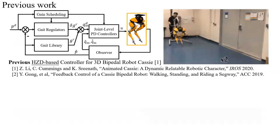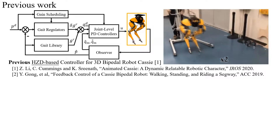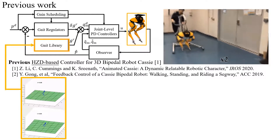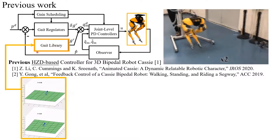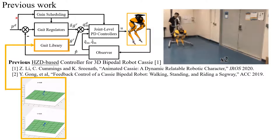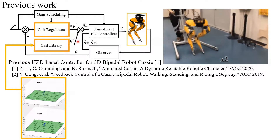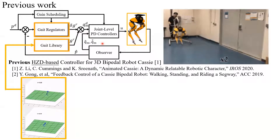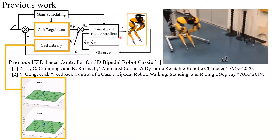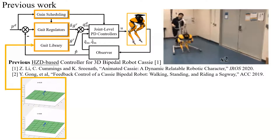This is our previous hybrid zero dynamics-based variable walking height controller for the 3D biped robot CASI, developed based on a model-based controller from Michigan. In this controller, we first obtain a gait library using the robot's dynamics offline. Then online, we obtain the reference gait from the library with respect to the robot's current sagittal and lateral walking speeds and walking height. To track desired walking velocity and walking height, we have PD-based gait regulators to generate offsets to the reference motions. Then we send desired motor positions to the joint-level PD controllers to generate motor torques. Additionally, different gaits at different walking heights may require different PD gains, so we have a gain scheduling module that utilizes a lookup table to adjust the PD gains with respect to the desired walking height.